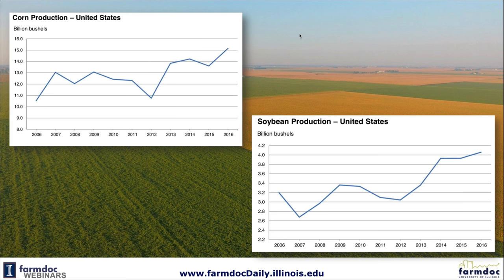What happened is that back in June we thought maybe we were going to have a short crop. Instead, we're projected to have much higher production in both corn and soybeans in 2016. Corn production is projected at something over 15 billion bushels — 15.2 billion bushels — a record production in the United States. Similarly with soybeans, we're at over four billion bushels, again a record. Those large productions are contributing to the lower prices we're looking at right now.